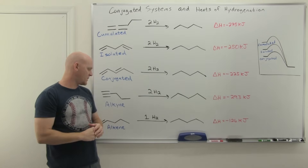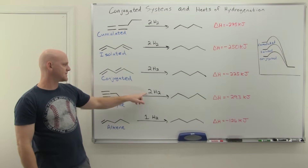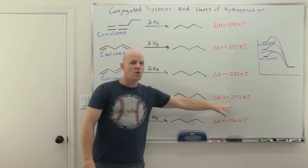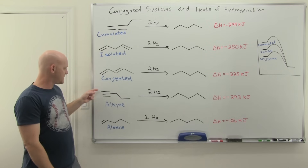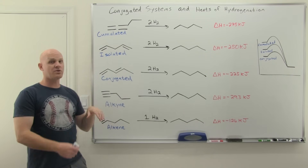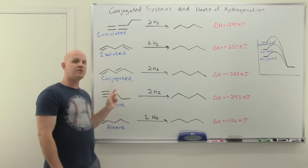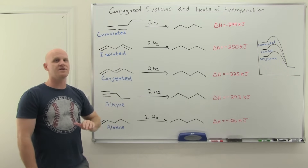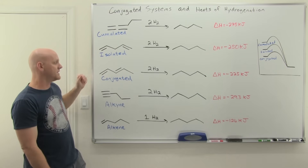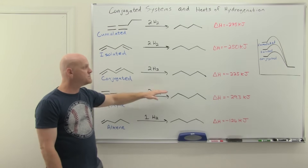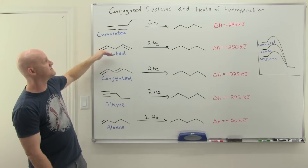Comparing alkynes: when you reduce a typical alkyne all the way with two equivalents of H2, it releases more heat than reducing two isolated or even cumulated alkenes. The two pi bonds of a triple bond are in perpendicular planes with extra repulsion — reducing the first pi bond releases more energy than the second. As a result, reducing the two pi bonds of a triple bond releases more energy than reducing two separate alkene double bonds, whether conjugated, isolated, or cumulated.